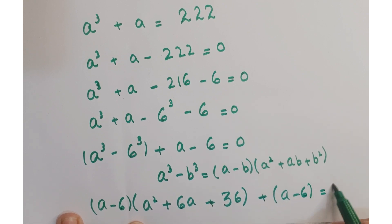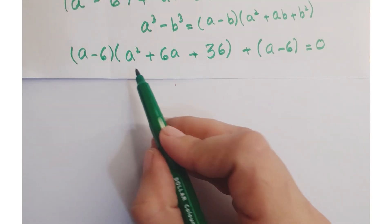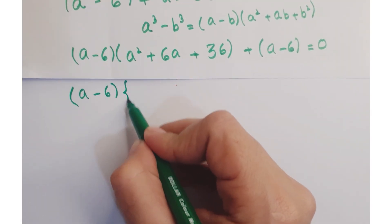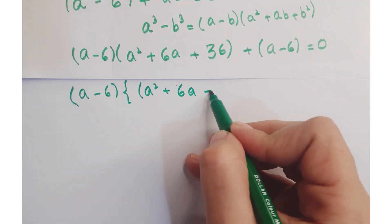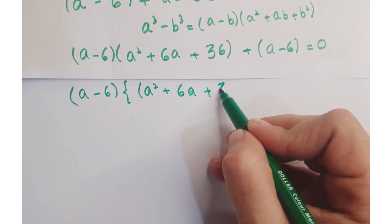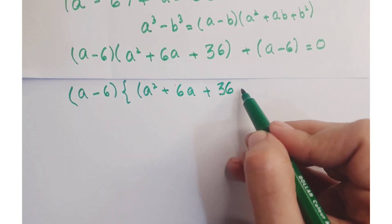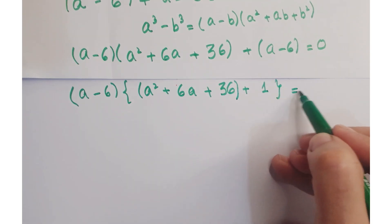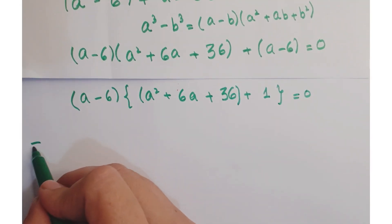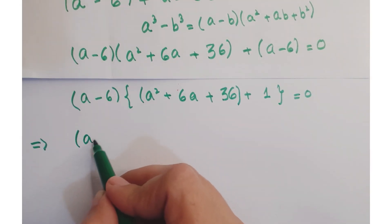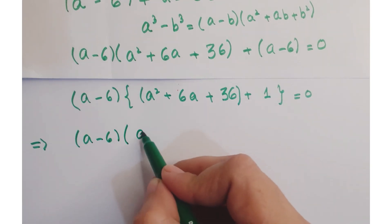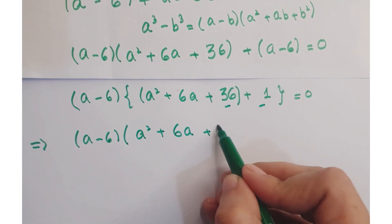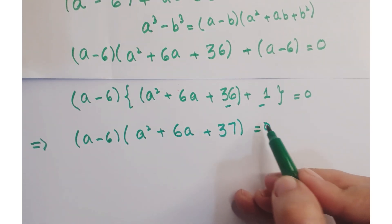So we can write this as a minus 6 into a square plus 6a plus 36, plus a minus 6 is equals to 0. Now taking a minus 6 common from both terms, you are left with a square plus 6a plus 36 plus 1 is equals to 0.